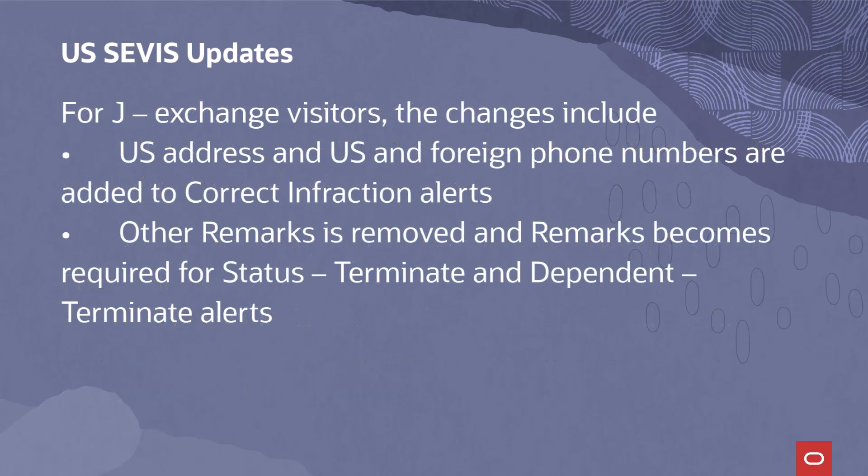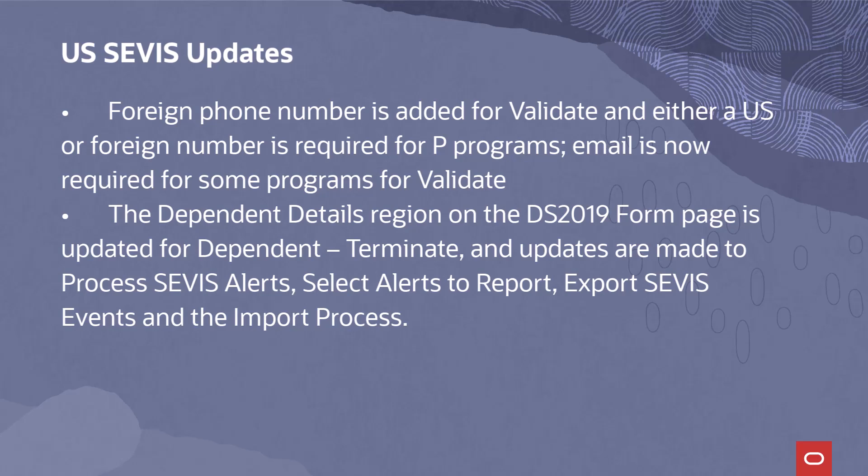For J-Exchange visitors, the changes include: US Address and US and Foreign Phone Numbers are added to Correct Infraction Alerts. Other Remarks is removed, and Remarks becomes required for Status Terminate and Dependent Terminate Alerts. Foreign Phone Number is added for Validate, and either a US or foreign number is required for P programs. Email is now required for some programs for Validate. The Dependent Details Region on the DS-2019 form page is updated for Dependent Terminate, and updates are made to Process Service Alerts, Select Alerts to Report, Export Service Events, and the Import Process.